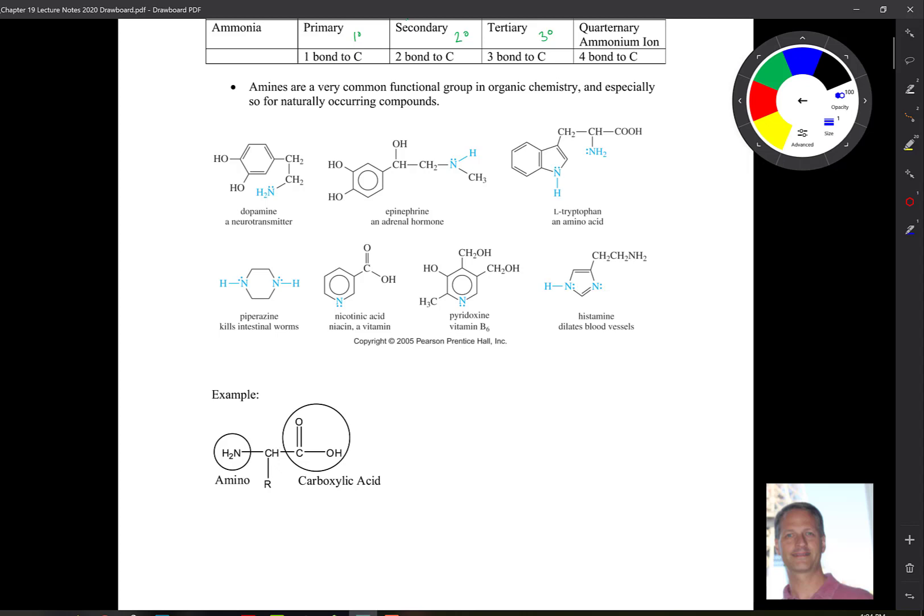We have peroxidine, vitamin B6, histamine, dilates blood vessels. You've heard of antihistamines. And they're also part of proteins. So proteins are composed of amino acids. And amino acids have this amino group on them. And a carboxylic acid functional group. So when you put those two together, you have amino acids.